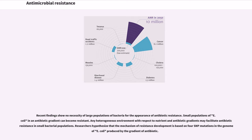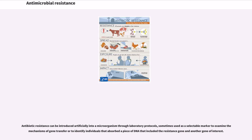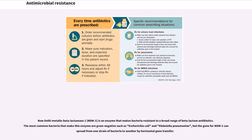Recent findings show no necessity of large populations of bacteria for the appearance of antibiotic resistance. Small populations of E. coli in an antibiotic gradient can become resistant. Any heterogeneous environment with respect to nutrient and antibiotic gradients may facilitate antibiotic resistance in small bacterial populations. Researchers hypothesize that the mechanism of resistance development is based on 4 SNP mutations in the genome of E. coli produced by the gradient of antibiotic. New Delhi metallo-beta-lactamase-1, NDM-1, is an enzyme that makes bacteria resistant to a broad range of beta-lactam antibiotics, and the gene for NDM-1 can spread from one strain of bacteria to another by horizontal gene transfer.